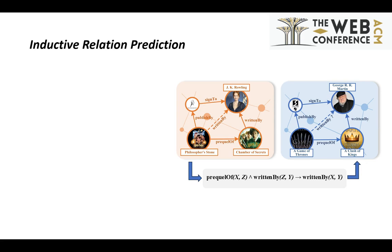Some methods have illustrated that the symbolic first-order logic rule can provide entity-independent information by its format and capture the inductive ability. For example, the relation 'written by' in the test set can be predicted without retraining the whole model. Therefore, integrating the rules is significant for inductive ability.